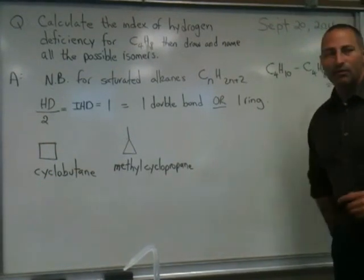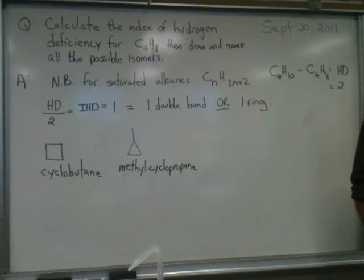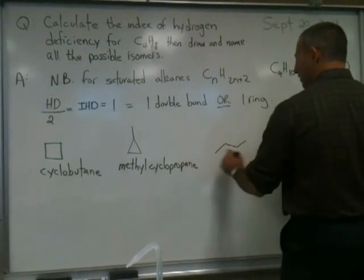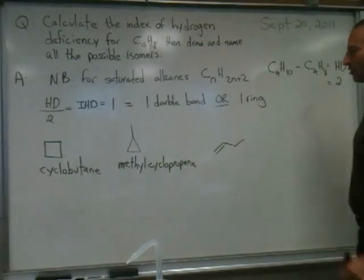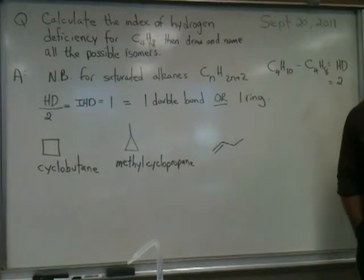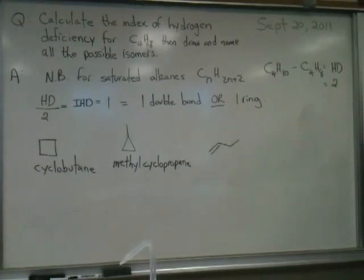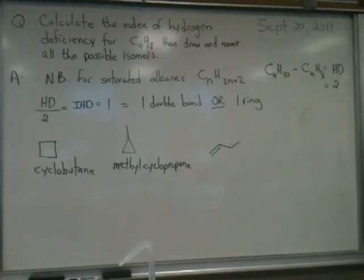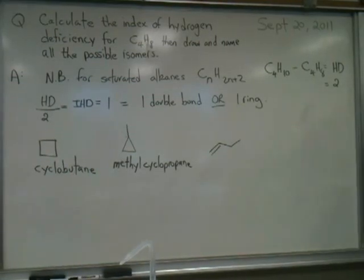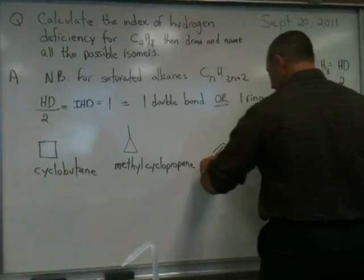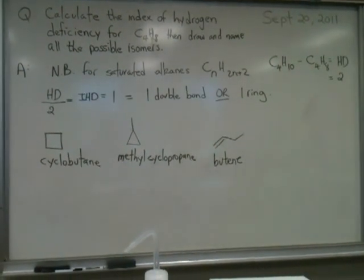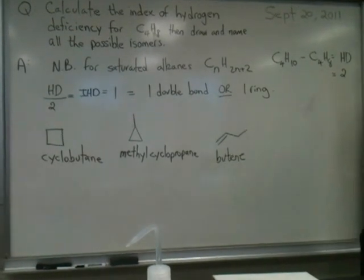Now we're going to move to molecules that contain a double bond and four carbons. With four carbons, let's put the double bond on the terminus — one, two, three, four. What is this molecule called? Four carbons with a double bond — it is a butene. Is it necessary to write 1? No, because it's understood that if it's at the first position, you can dispense with writing the one.